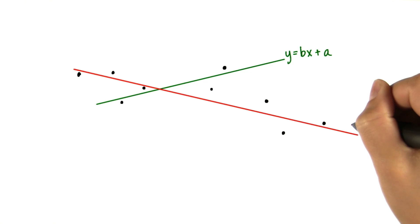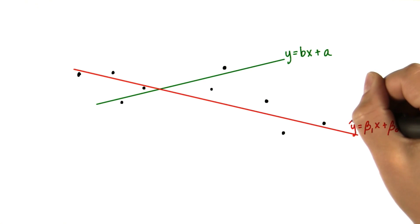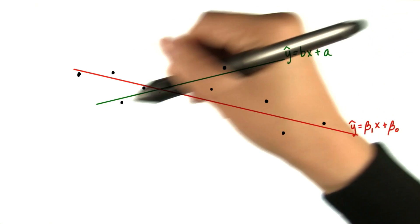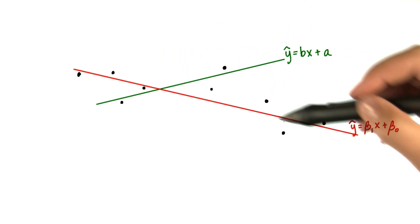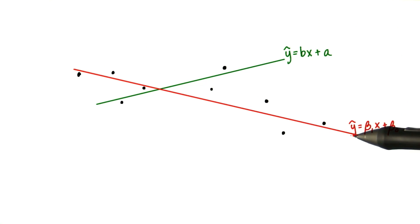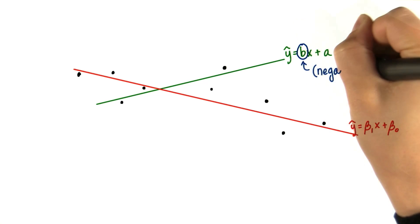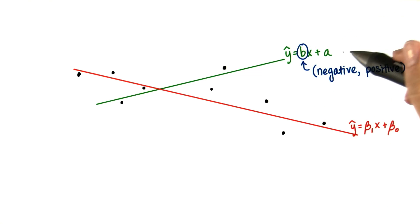Since we're assuming this is the true regression line, we'll use the common notation for the regression coefficients for the population — and these should have hats, since they're the predicted values. If this were the case, where the sample regression line is positively sloping but the true regression line for the population is negatively sloping, that would mean that the confidence interval for b has a negative lower bound and a positive upper bound. It includes 0 within this range.